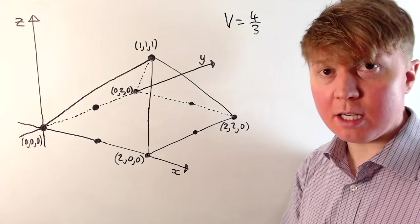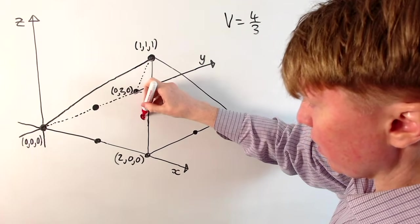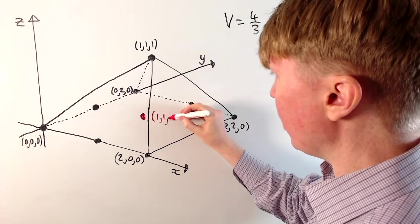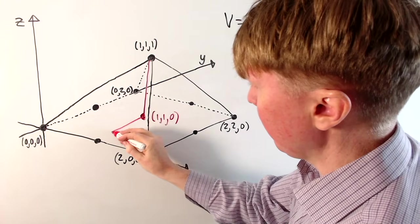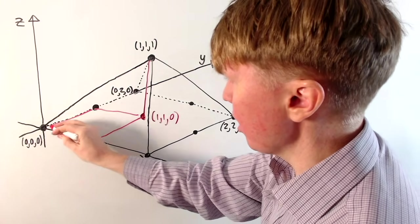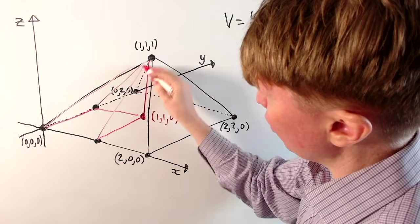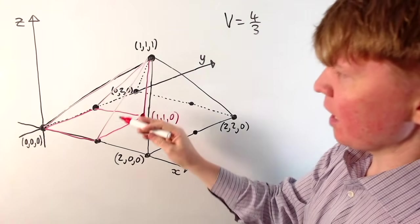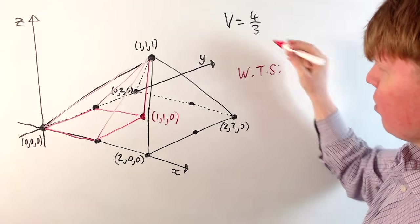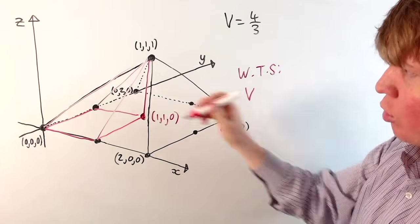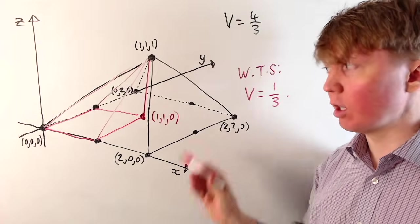In our proof, we're not actually going to work with the entire pyramid — we're just going to work with one quarter of the pyramid. So if we draw in this point here, in the middle at (1, 1, 0), and we take this quarter of the pyramid going up to the top, we want to show that the volume of this quarter pyramid is going to be 1 third in order to prove this formula for this specific pyramid.